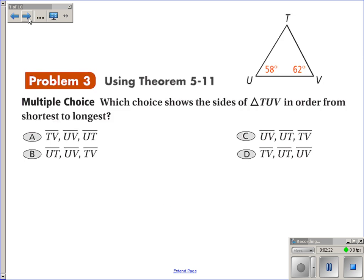Using theorem 5-11, which choice shows the sides of triangle TUV in order from shortest to longest? Well, the first thing I need to do is to find that third angle.